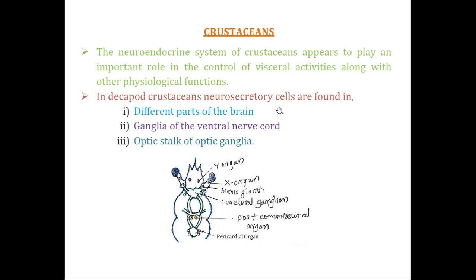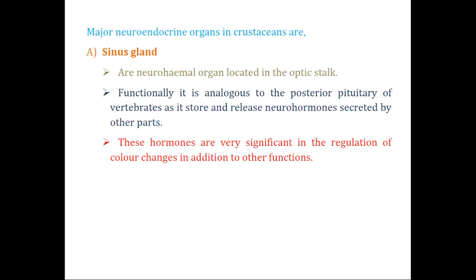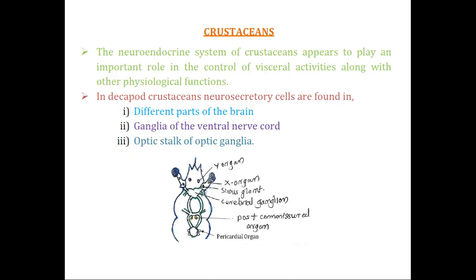Neurosecretory cells are found mainly in these regions: different parts of the brain, ganglia of the ventral nerve cord, and the optic stalk or optic ganglia. In invertebrates, the nerve cord is on the ventral side, whereas in our case the nerve cord is on the dorsal side. The optic stalk refers to the stalk emerging from the head region on which the eye is present, and the ganglia are found at the base of the optic stalk. These are the three main regions where we can find neuroendocrine organs in crustaceans.